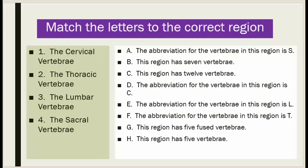B: this region has seven vertebrae. C: this region has 12 vertebrae. D: the abbreviation for the vertebrae in this region is C. E: the abbreviation for the vertebrae in this region is L. F: the abbreviation for the vertebrae in this region is T.